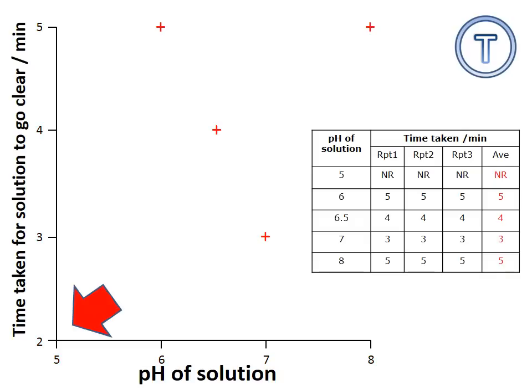As I've just put a little arrow there, because at pH 5, remember, I got no result. No result, not zero, because that would suggest it happened really quickly. So, for no result, I've not plotted a point on my graph. I've just left it blank there.